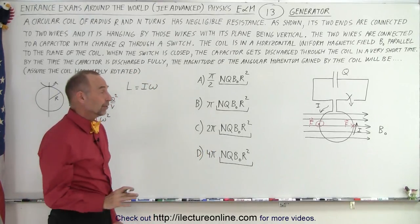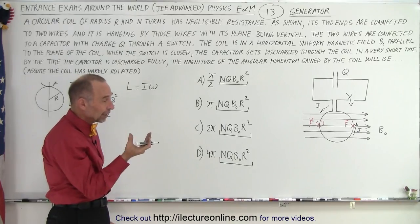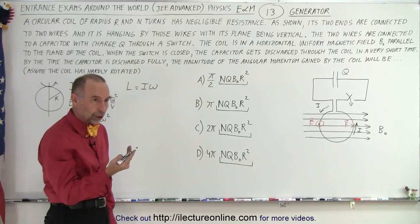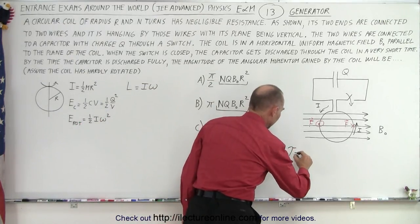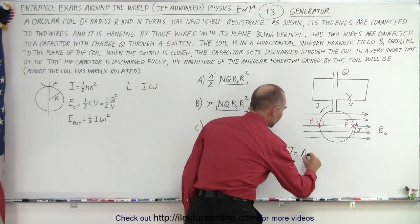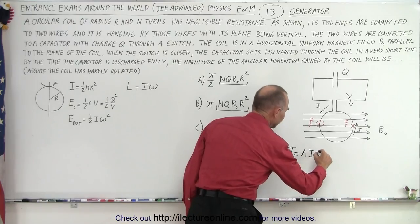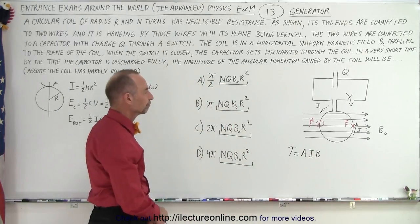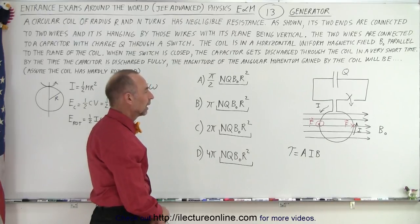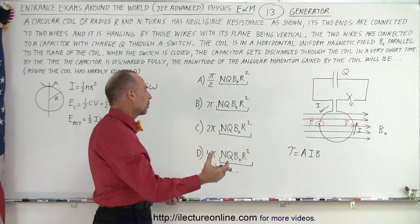So, then I thought about generators. And with a generator, you realize that there's going to be a torque. And the torque is equal to the area of the loop times the current times the magnetic field.